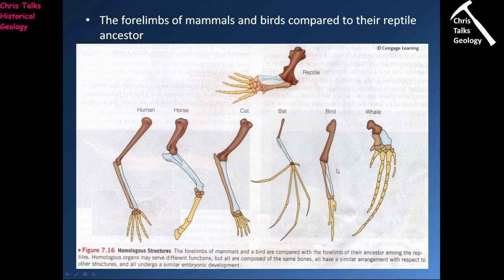Let's have a look at these forelimbs. We can see a reptile forelimb at the top with the humerus in brown, then the radius and ulna, then the carpals and metacarpals — the wrist and palm bones — and then the phalanges, the fingers. The question is, can we see these same bones in all of these animal forelimbs? And the answer is yes. The humerus is in all of them. Then we have the radius and ulna — in the case of horses, the radius and ulna fuse together; cats have them; in bats the ulna is quite small but it is there; birds have them, and whales have them.